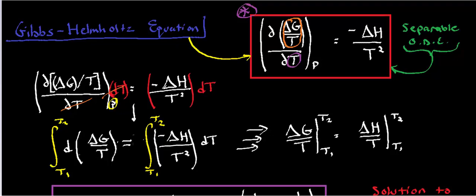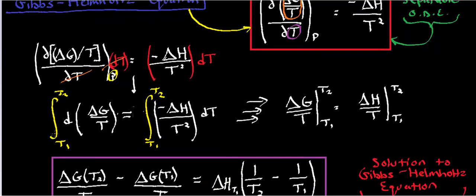Now notice what I've done at that point. Notice I have all the delta G over T's on the left side, and I have all the explicit T's on the right side. That's a sign that you have a separable equation. And separable equations are arguably probably the easiest differential equations to deal with because once you have the variables separated, you can actually just integrate both sides.